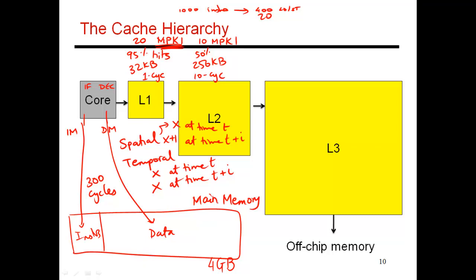Then you get to the L3. If you miss the L2, then you look up the L3, which is going to be much larger in size. Let's say this is 2 megabytes in size. And because of that larger size, this could take, say, 30 cycles to lookup.